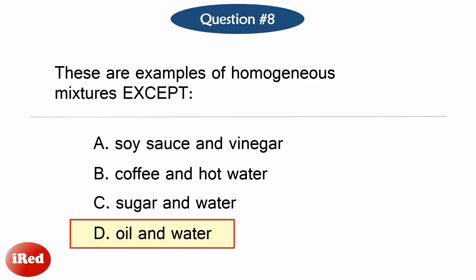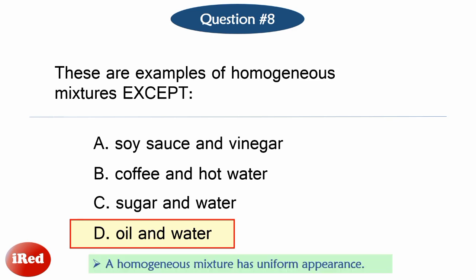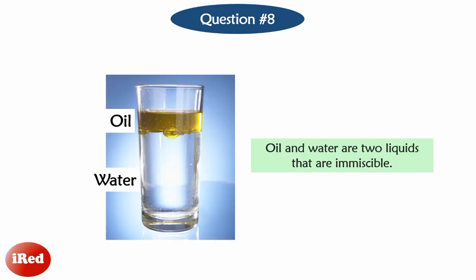The correct answer is letter D: Oil and water. A homogeneous mixture has a uniform appearance. Oil and water are immiscible. When oil is added to water, oil does not dissolve in water. Instead, oil floats to the top because it is less dense than water.